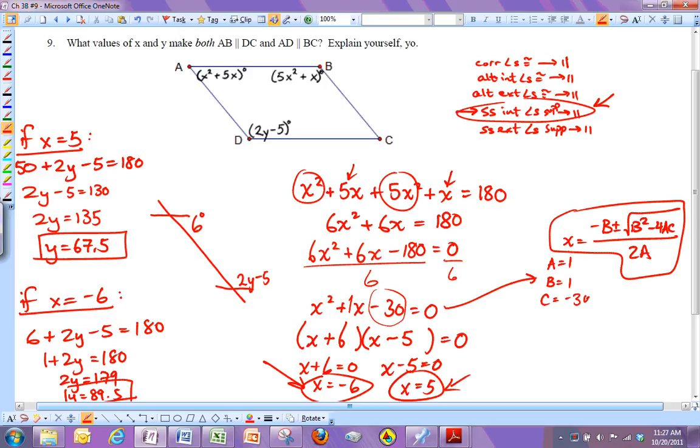So you get two sets of answers. When x is negative 6, you get 89.5. And when x is 5, you get 67.5.